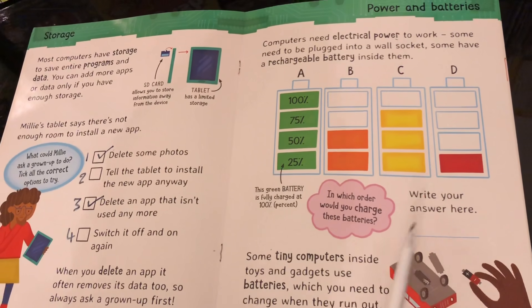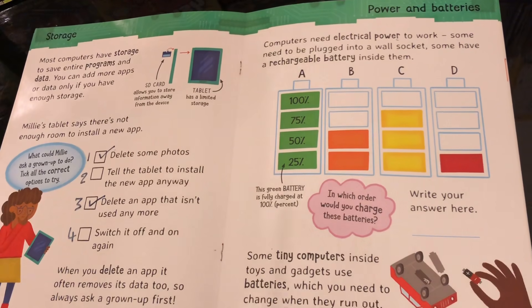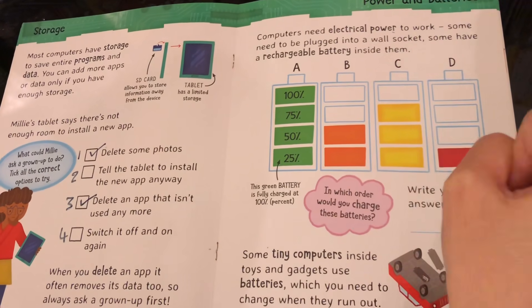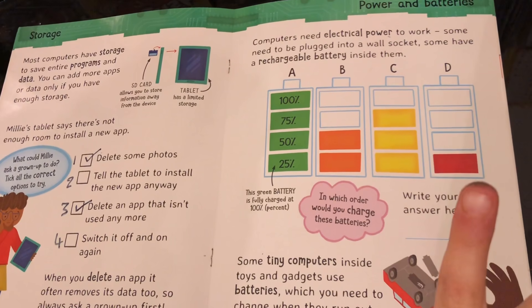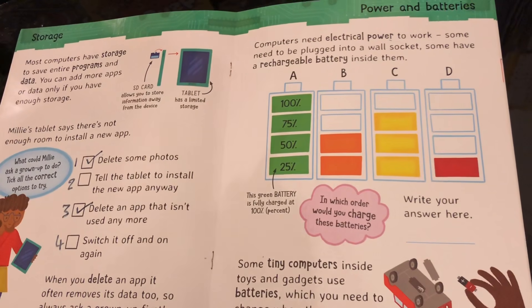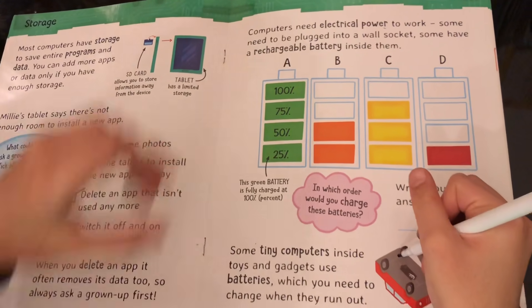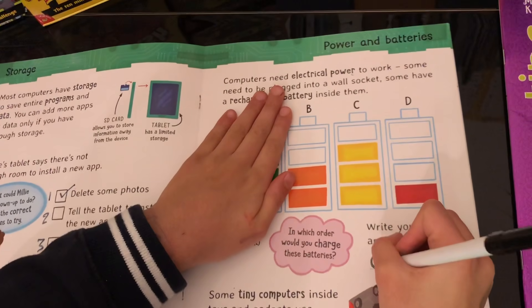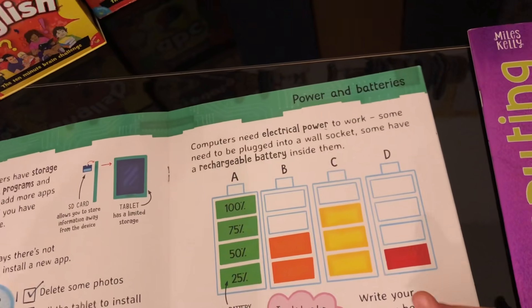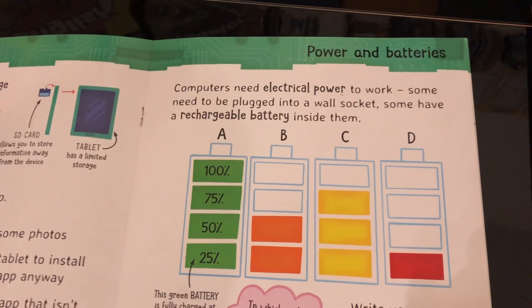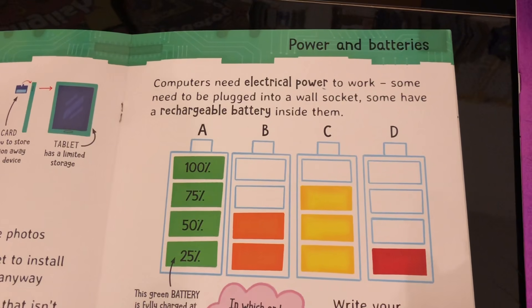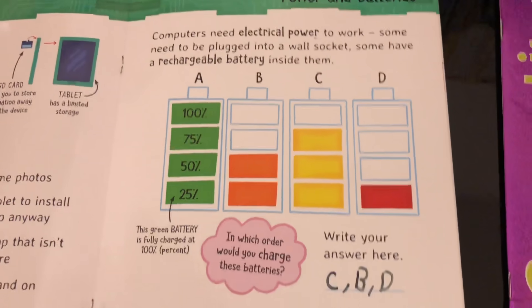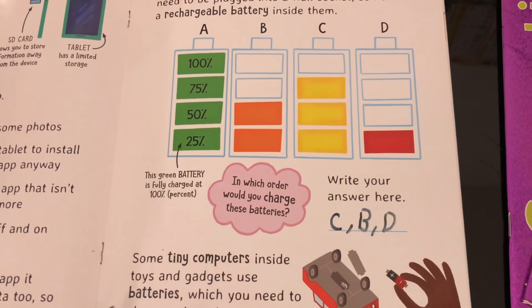The answer — you have to order them B, C, D. We've already got A so we can forget about that. C is third at 75%, B is at 50%, and D is at 25%. Some tiny computers inside toys and gadgets use batteries which you need to change when they run out.